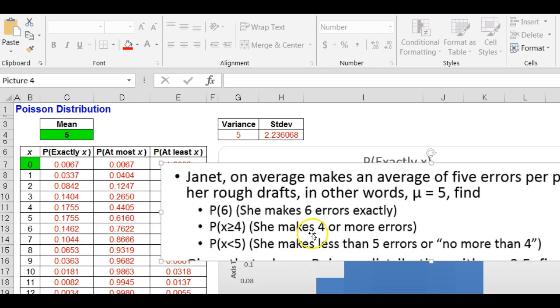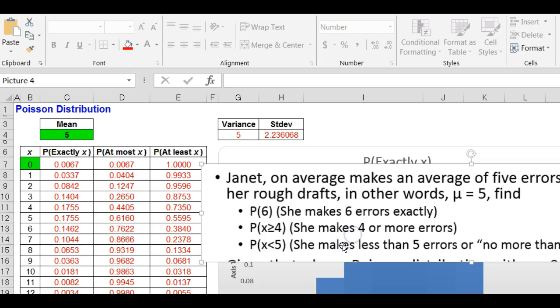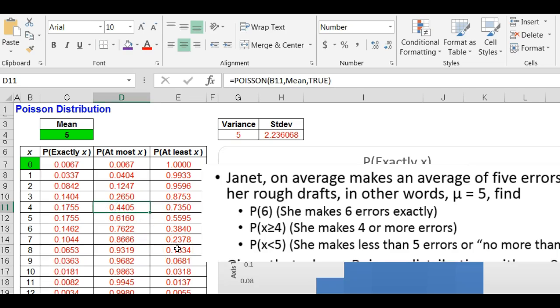Find the probability she makes less than five errors. So less than five would be at most four, which is 0.4405. It's really that easy.